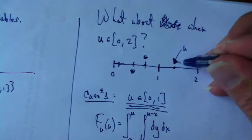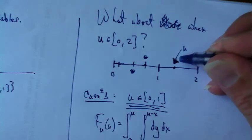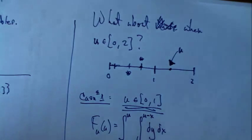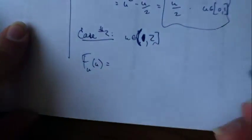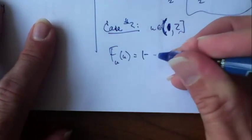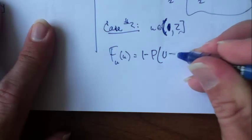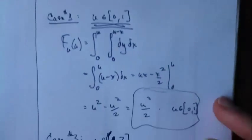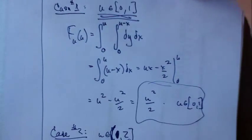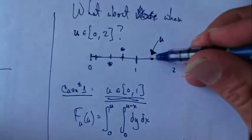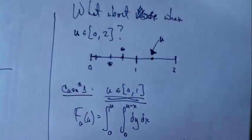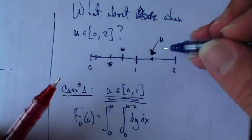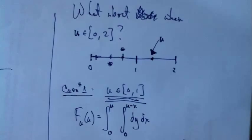There are a lot of ways to think about this. One way I might try is to just use that rule for complements. I always have that rule lying around. It's really handy. This is 1 minus the probability that u exceeds little u. So what's the chance that u exceeds little u? If little u is here, what's the chance that x plus y is at least that amount?